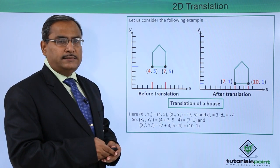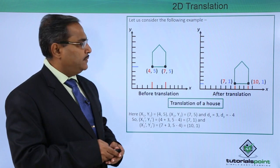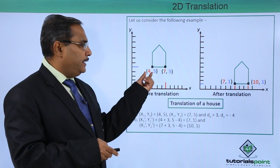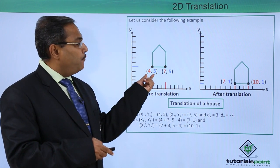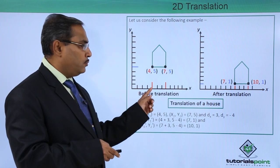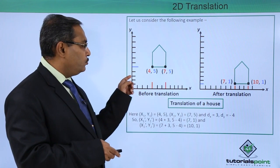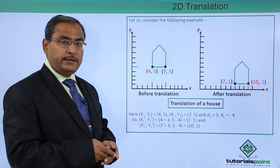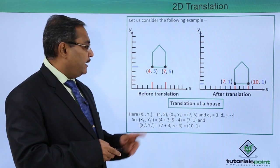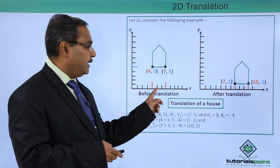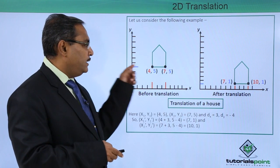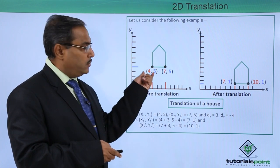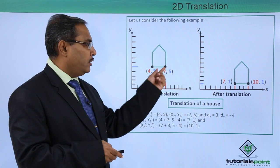Let us consider one example to clear our conception. Here we have considered one diagram. Consider this point having the value 4 comma 5 — that means 1, 2, 3, 4 along x and 1, 2, 3, 4, 5 along y. The initial coordinate of this point is 7 comma 5, and the coordinates of the two points are 4 comma 5 and 7 comma 5.